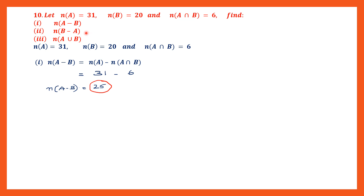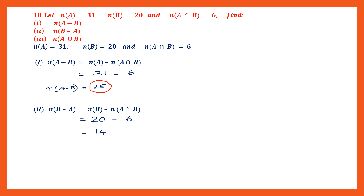The second question: cardinal number of B minus A. Using the formula: cardinal number of B minus cardinal number of A intersection B. Substituting: 20 minus 6 is 14. We have found the cardinal number of B minus A, and the answer is 14.